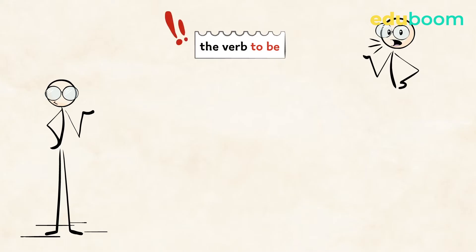You use it all the time when you speak English. So it's really important. The verb to be has three forms: am, is, and are.